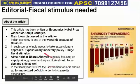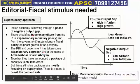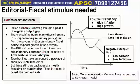Now let's understand the expansionary approach. Let's briefly revise the business cycle. There is an expected or anticipated growth rate — for example, India's ideal growth rate is 8%. When the actual growth rate goes above 8%, that period is called the boom period, also known as the positive output gap period.